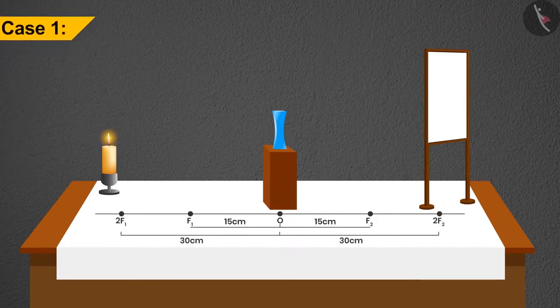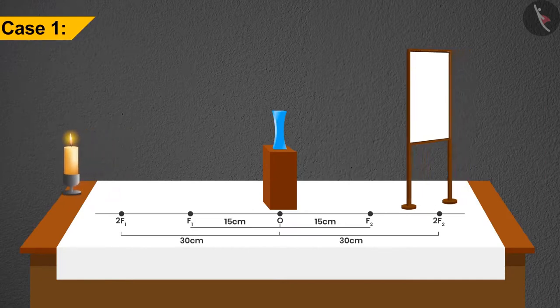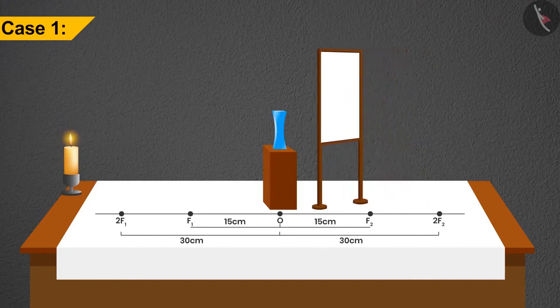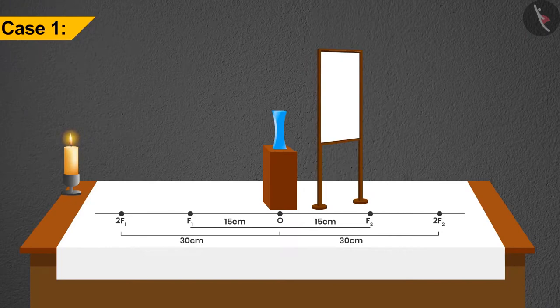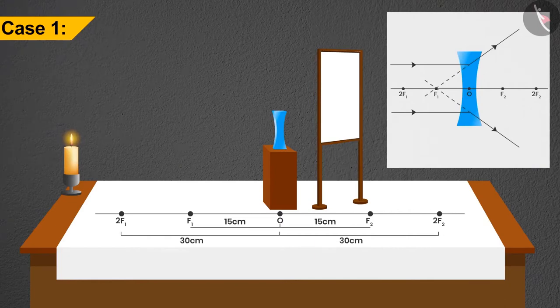In the first case, let's put the candle at infinity. Do we see any image on the screen? No. This means that the concave lens creates a virtual image in this case. If we remove the screen and look, we can find that the image is made at the focus on the first side, which is highly diminished in size and erect.